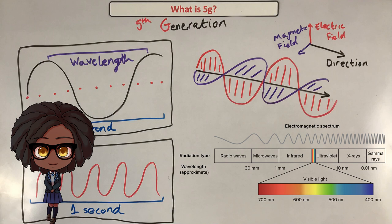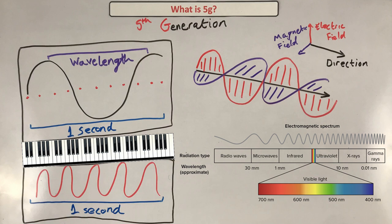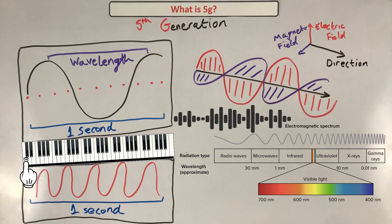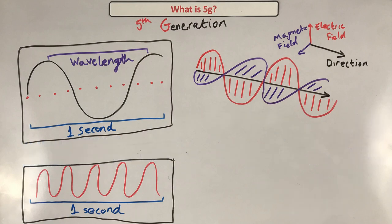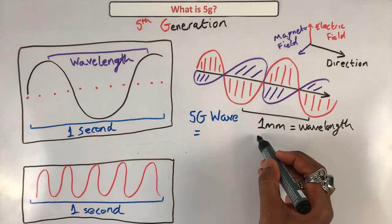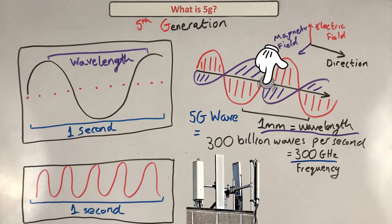So wait — microwaves are the same thing as visible light? Well, yes but actually no. They're both made of the same stuff but are different. For example, the keys on a piano generate the same type of wave — a specific type of sound wave — the only difference is the frequency and the wavelength. The low key has a longer wavelength and lower frequency, equivalent to radio waves. The higher key has a shorter wavelength and higher frequency, like gamma rays. 5G waves have a wavelength of one millimeter and a frequency of 300 gigahertz, meaning roughly 300 billion waves pass a point every second.